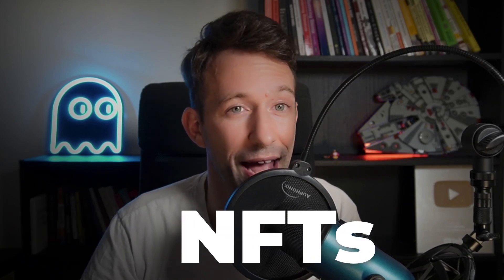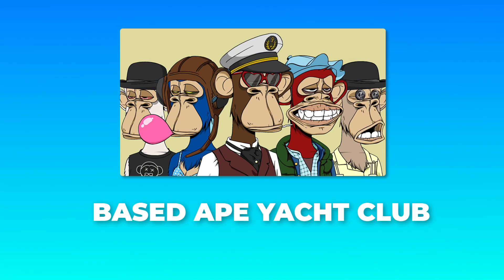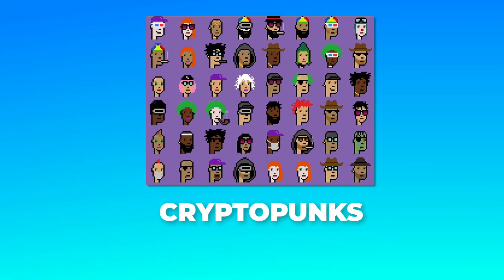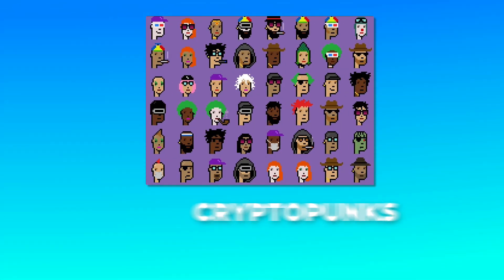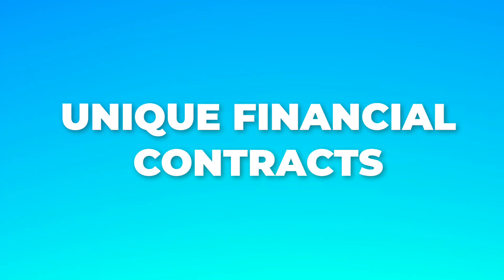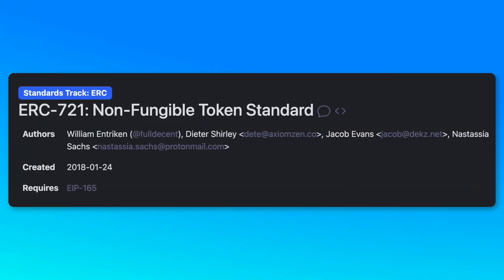Next, let's talk about NFTs, or non-fungible tokens. Non-fungible tokens are crypto assets that are unique. When most people think of NFTs, they think of projects like Bored Ape Yacht Club or CryptoPunks. So far, digital art has been the biggest use case for NFTs. But NFTs have many more use cases, including for unique financial instruments like insurance contracts. On Ethereum, we have ERC721 for NFTs.